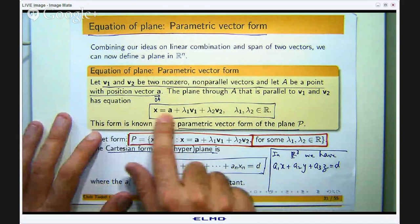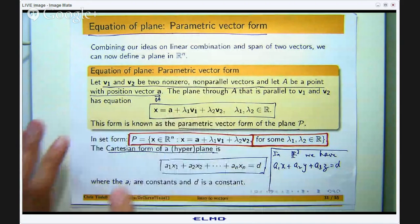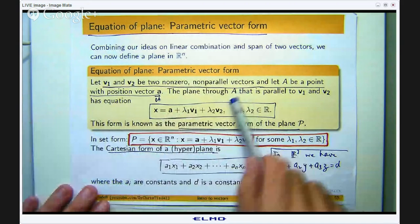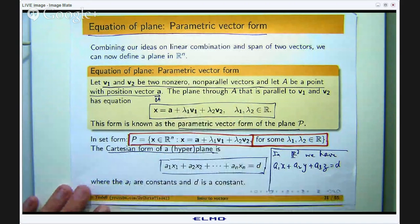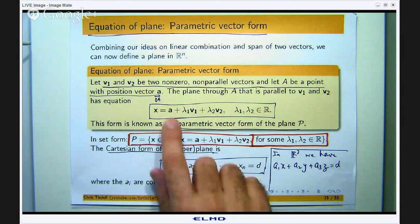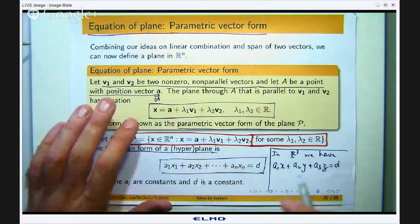And this is the vector form, the parametric vector form. Here a is the position vector of a point that lies on the plane. v1 and v2 are two vectors that are parallel to the plane but not parallel to each other and not both zero. And if you add these all up you get this vector, a parametric vector form.